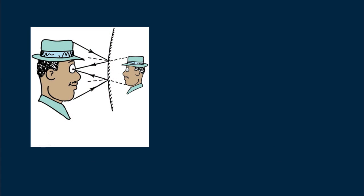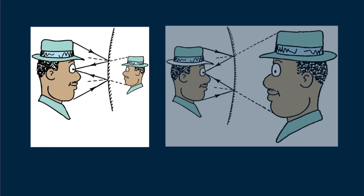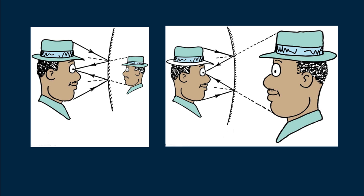When a mirror is curved, the sizes and distances of object and image are no longer equal. The law of reflection, in a way, still applies. A curved mirror behaves as a succession of flat mirrors, each at a slightly different angular orientation. At each point, the angle of incidence is equal to the angle of reflection. Note that, for a curved mirror, unlike a plane mirror, the normals at different points on the surface are not parallel to one another.